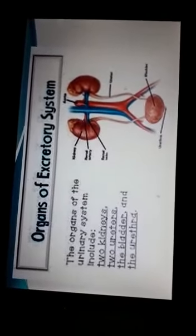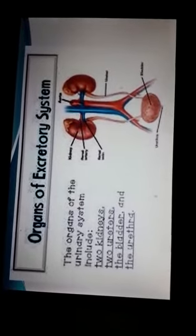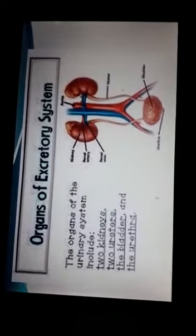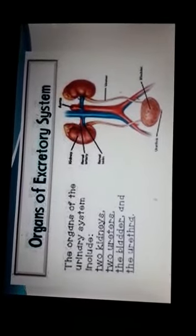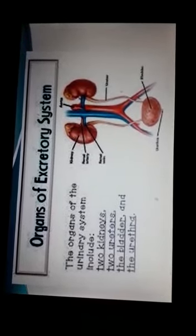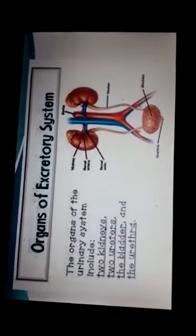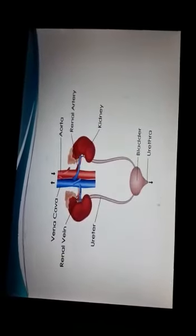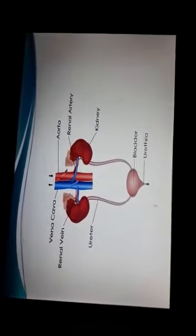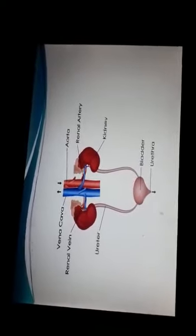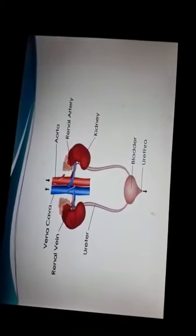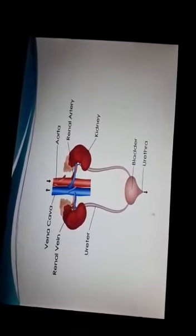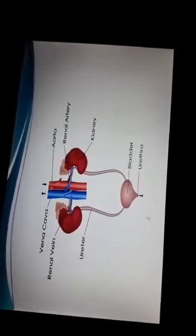Next, what are the different organs of the excretory system? If we talk about the different organs, it consists of two kidneys, two ureters, a bladder, and a urethra. So let's see the function of these organs. First of all are the kidneys.